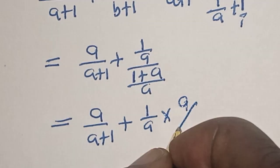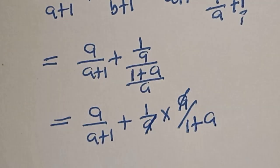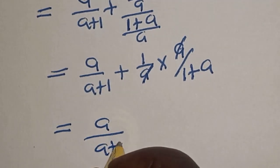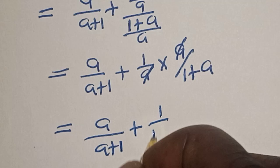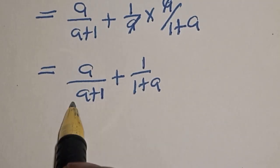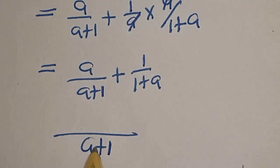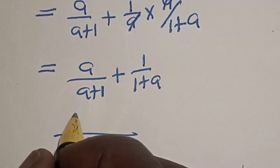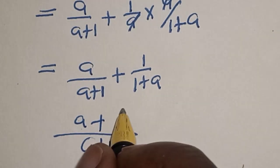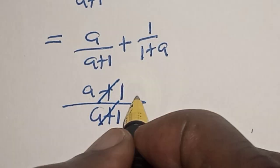Then this is equal to a over a plus 1 over 1 plus a. We have to find the LCD here. The LCD is a plus 1. Then this one will cancel this. This is equal to 1.